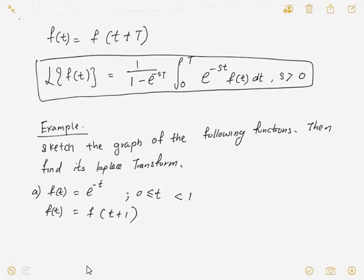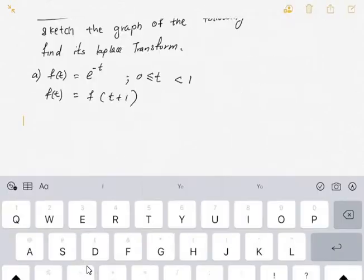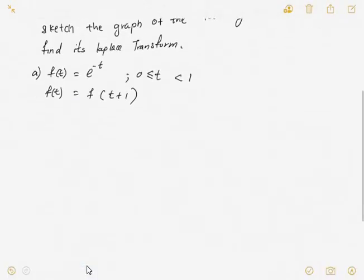So now you know that T — the period — is equal to what? T is equal to 1. So from here you know that T is equal to 1, and this is referred to as one cycle.